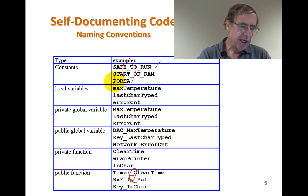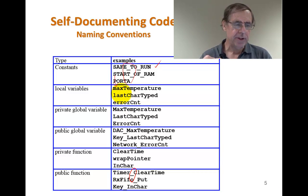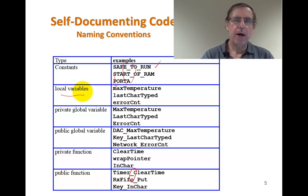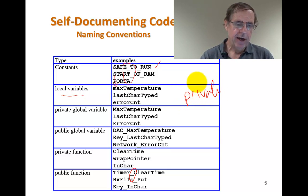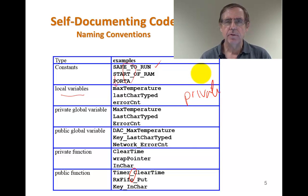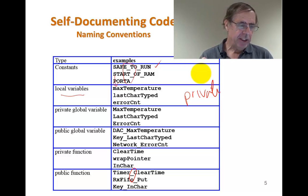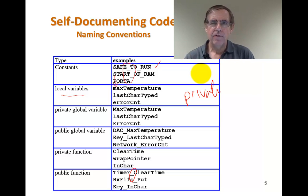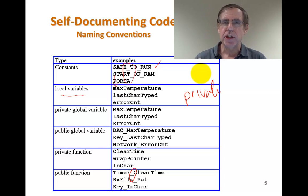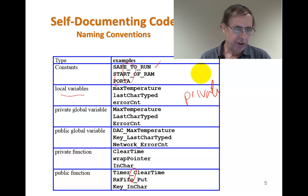If it's private, the first letter of the variable will be lowercase. If it's uppercase, that means it's public. So I can tell variables that are shared versus variables that are locally scoped to that function.